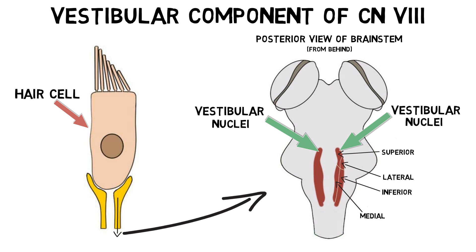Neurons leave each of these nuclei to project to various areas in the brain, brainstem, and spinal cord to coordinate head, eye, and body movements to maintain balance and equilibrium, along with other related functions.